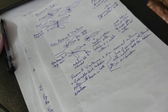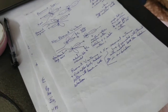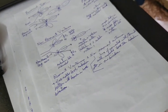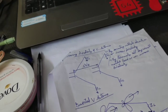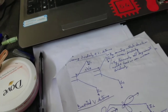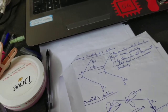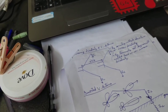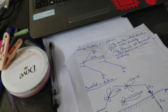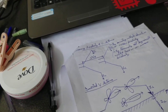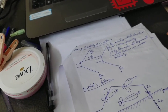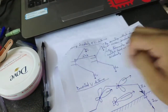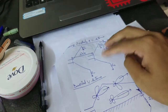We have now completed the resonant type and non-resonant V antenna. To increase the directivity of the V antenna, we can increase the length of the long wire.